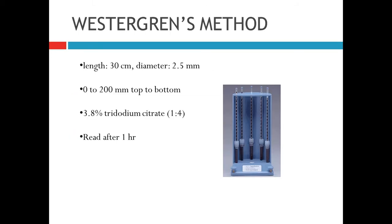The Westergren method uses a Westergren tube. This tube has a length of 30 cm and a diameter of 2.5 mm, with markings from 0 to 200 mm. Inside the tube there is 3.8% trisodium citrate solution. The test is read after 1 hour.